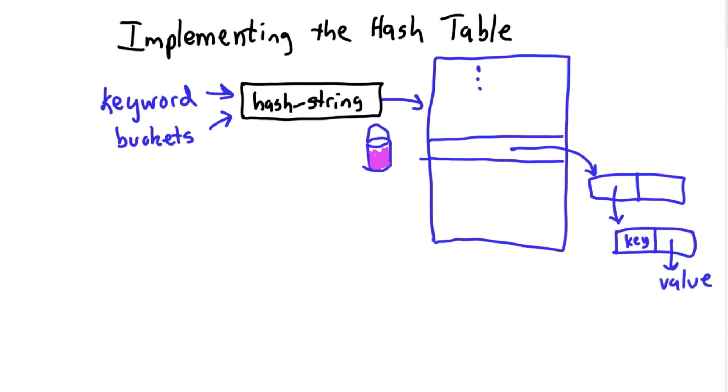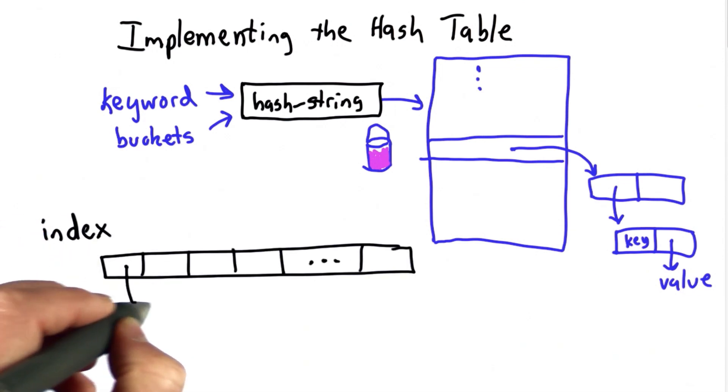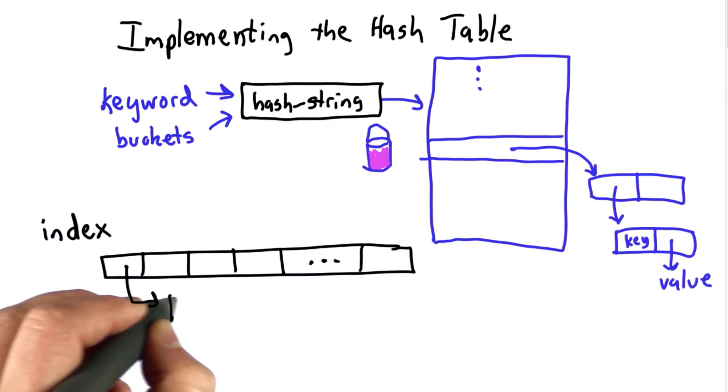So the first question is, how is this going to change our data structure? This was what we had before. If you remember, we had our index was a list of keywords. We had a list of entries, and each entry was a pair, which was a keyword.